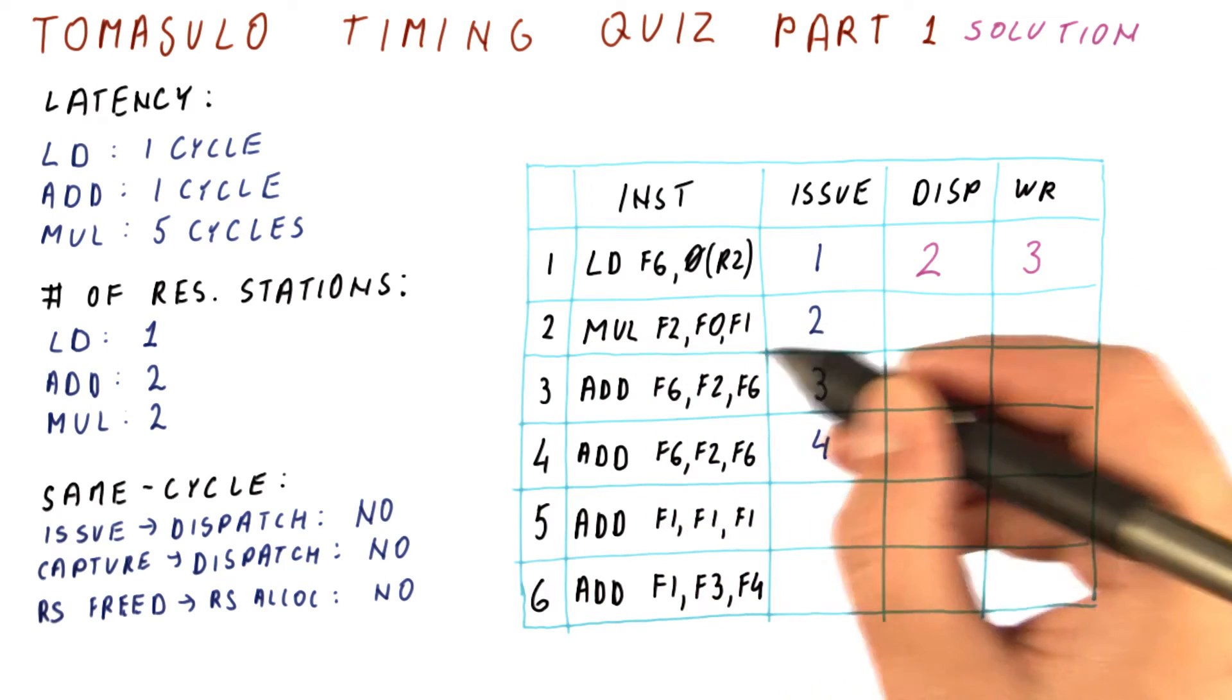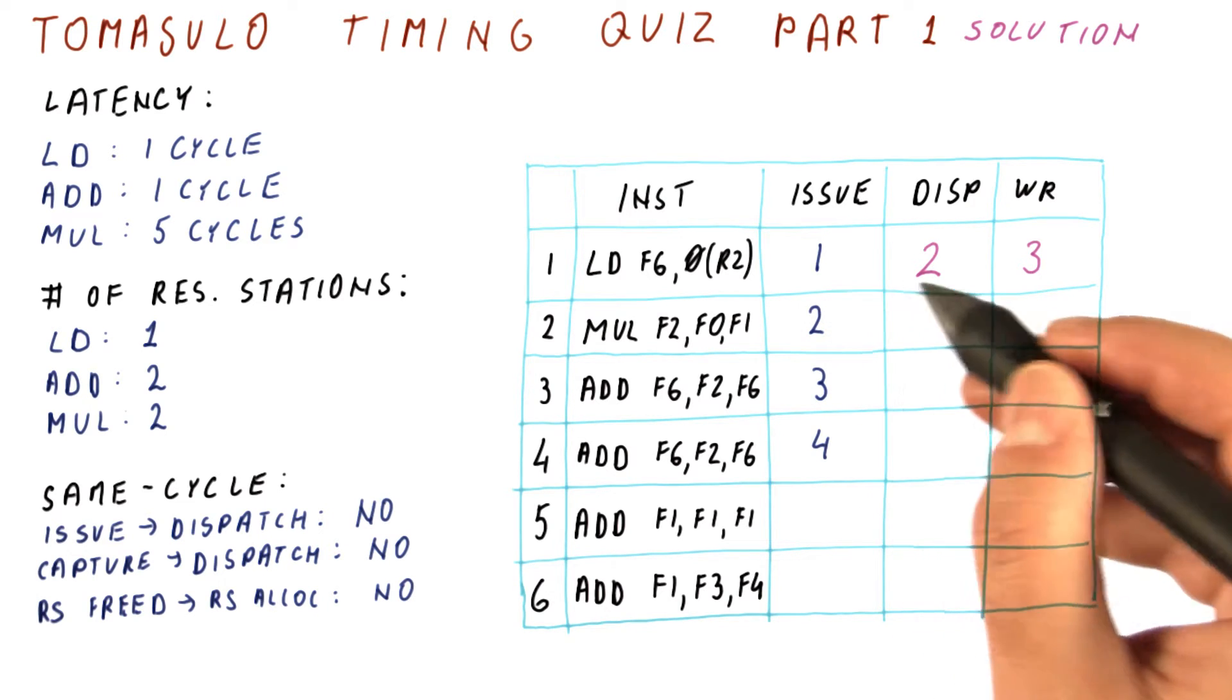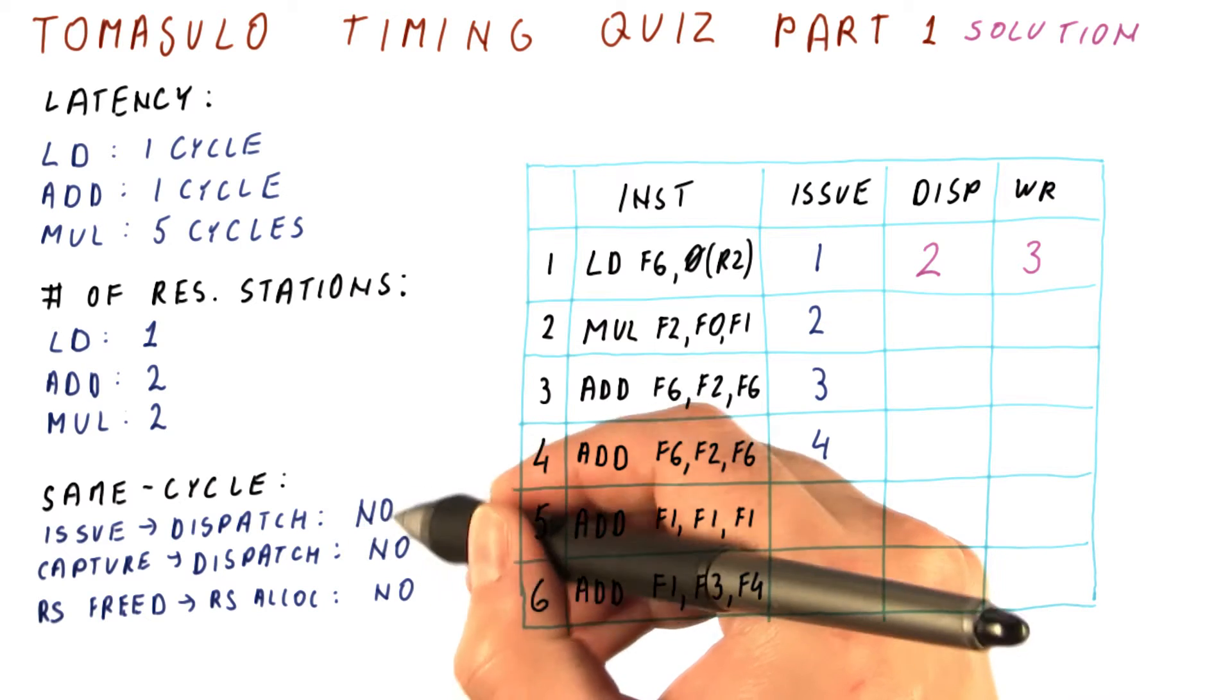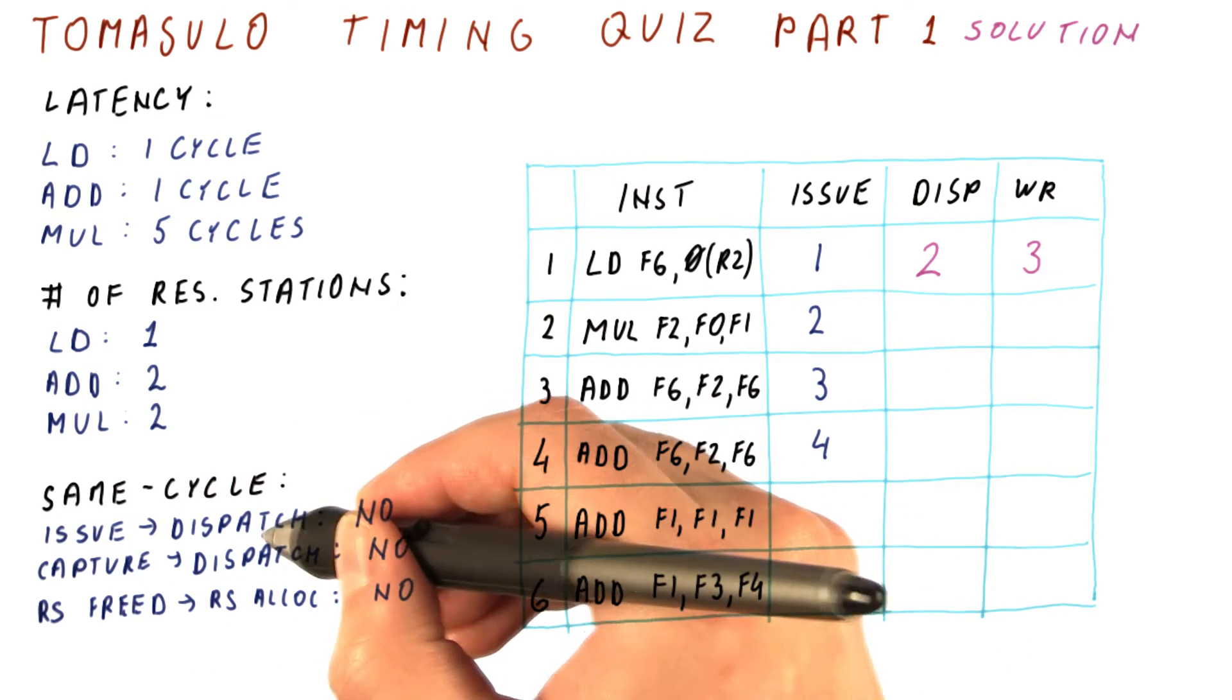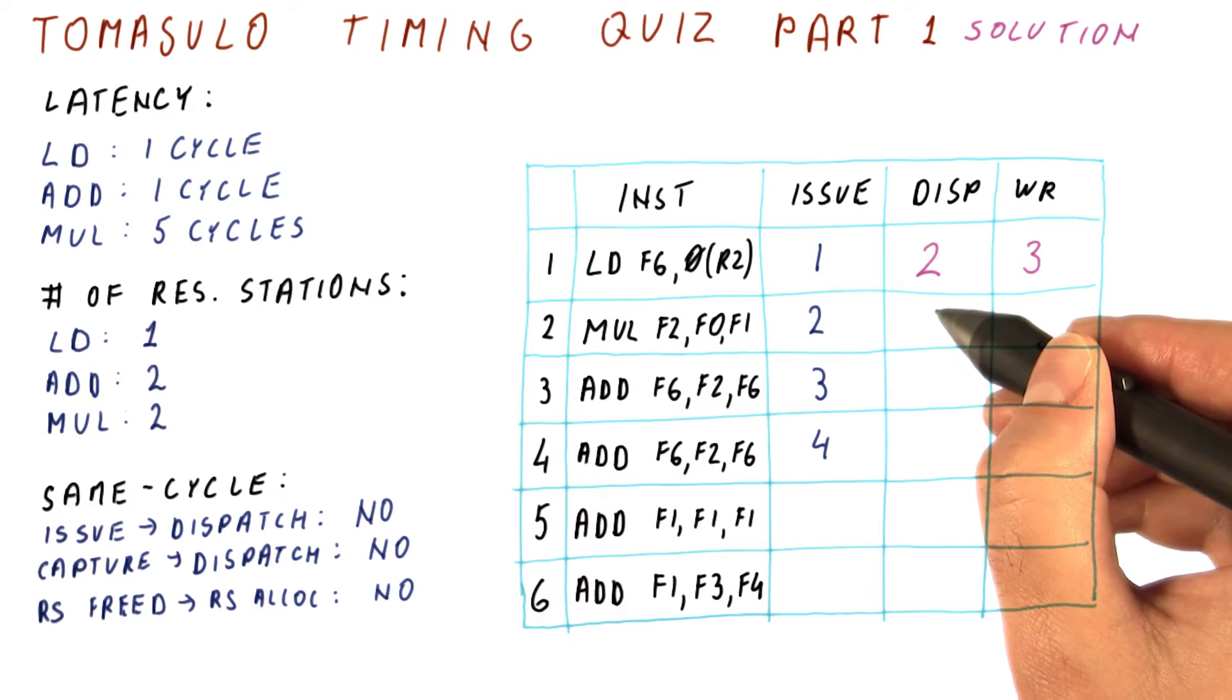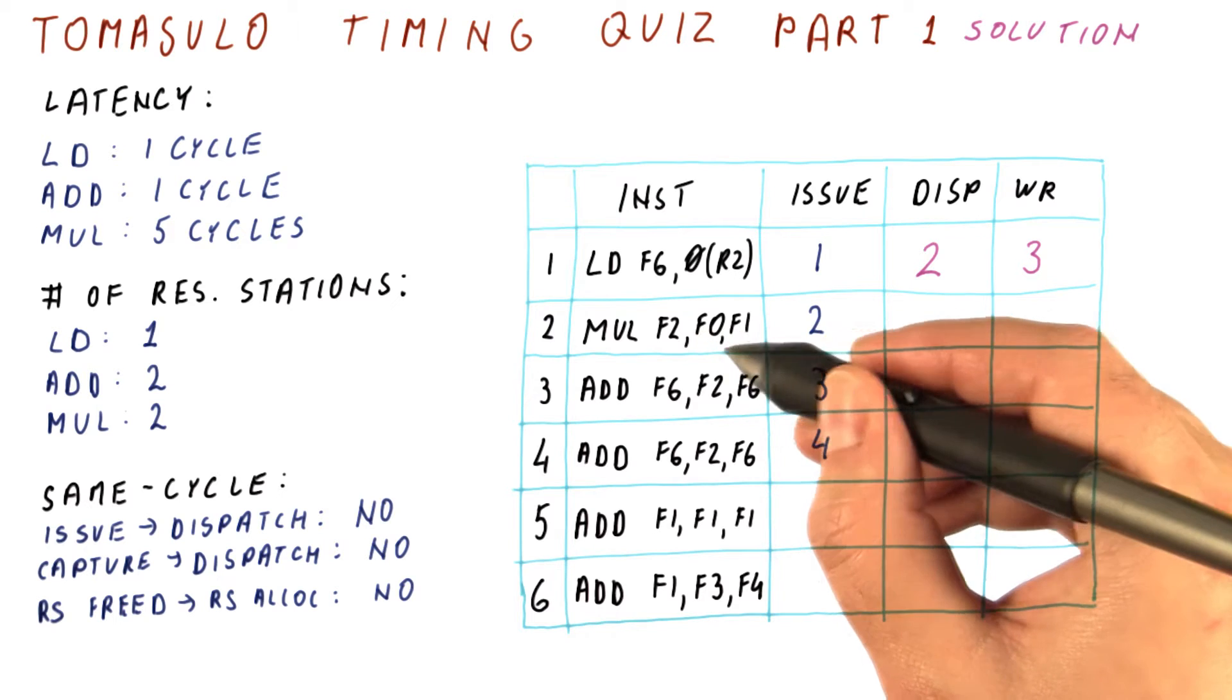The multiplication instruction is issued in cycle two. It will dispatch in cycle three or later because it cannot issue and then dispatch in cycle two. It will dispatch either in cycle three or whenever its operands become available.